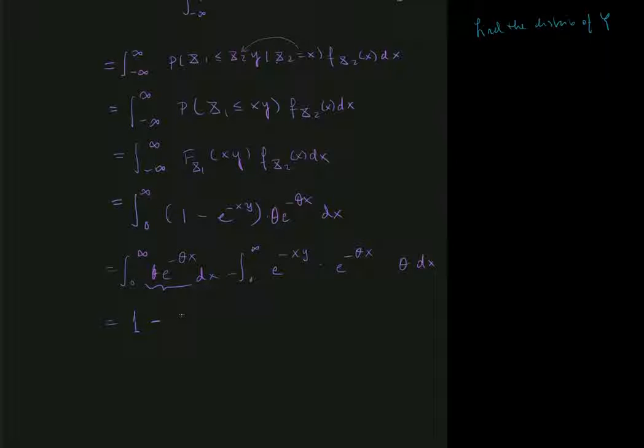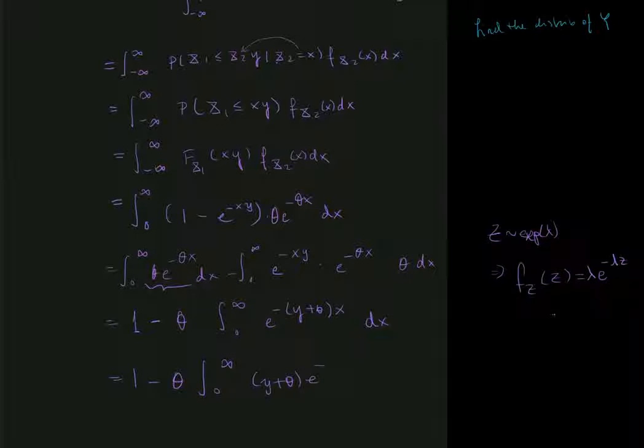Now, what's the other thing that I have? Well, here I have theta outside of the integral and inside of the integral. I have e to the minus y plus theta x. And I can see that this kind of reminds me of the density in an exponential distribution with parameter y plus theta. The only difference is that I need the parameter to be multiplied onto the density, right? Because if I have z exponentially distributed with parameter lambda, that means that the density of z is equal to the parameter multiplied by e to the minus the parameter z for z greater than 0.